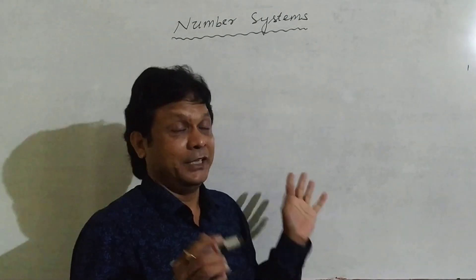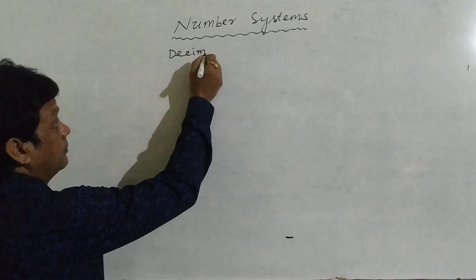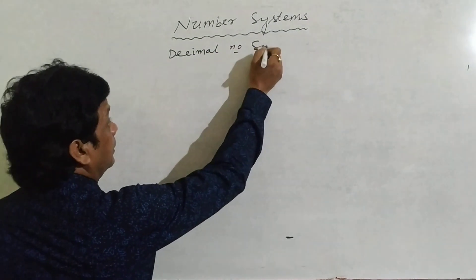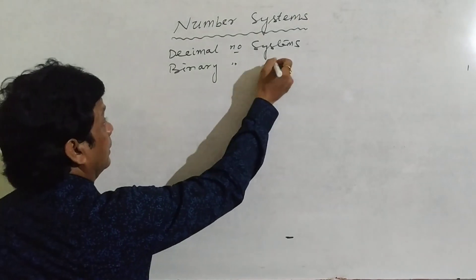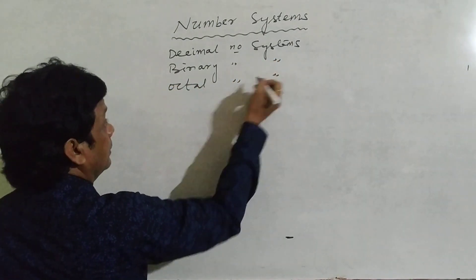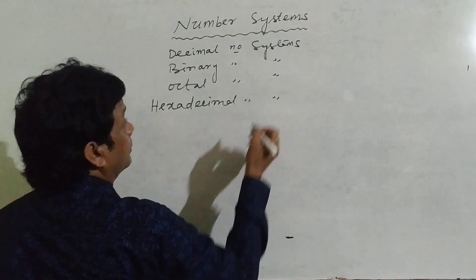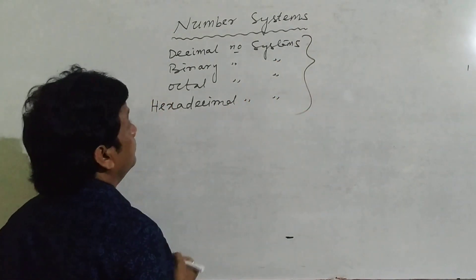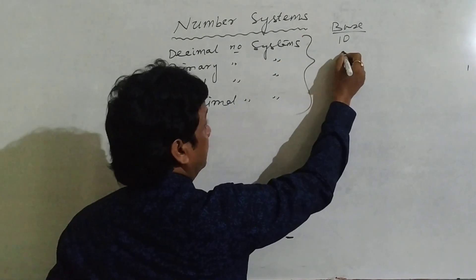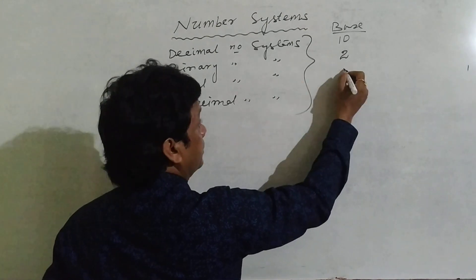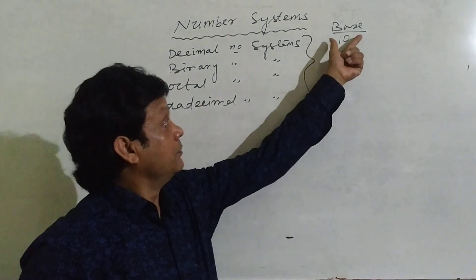In our present system there are four number systems: decimal number system, binary number system, octal number system, and hexadecimal number system. The base of the decimal system is 10, the base of the binary number system is 2, the base of the octal number system is 8, and the base of hexadecimal is 16.